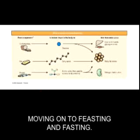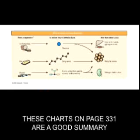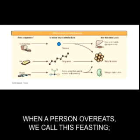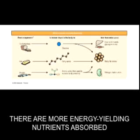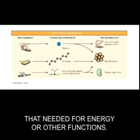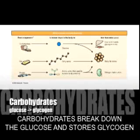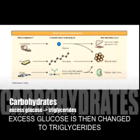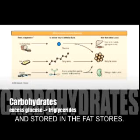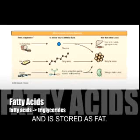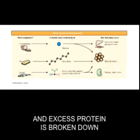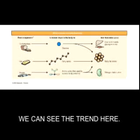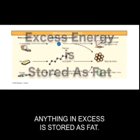Moving on to feasting and fasting — the charts on page 331 are a good summary of what we've learned this semester. When a person overeats, we call this feasting. When we eat in excess, there are more energy-yielding nutrients absorbed than needed. Carbohydrates break down to glucose and are stored as glycogen in the muscle and liver; excess glucose is changed to triglycerides and stored in fat stores. Excess fat is broken down to fatty acids and stored as fat. Excess protein is converted to triglycerides and stored as fat. Anything in excess is stored as fat.